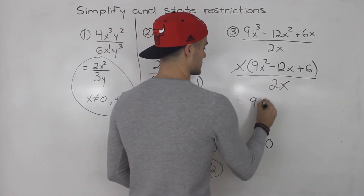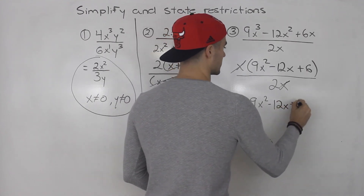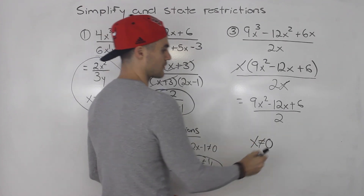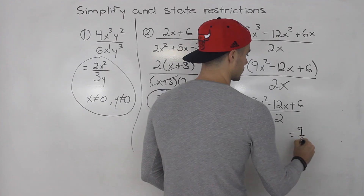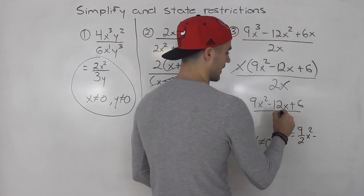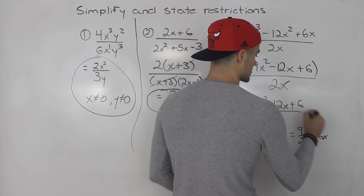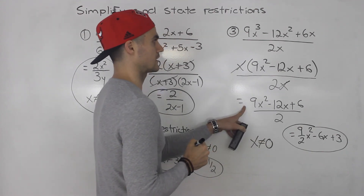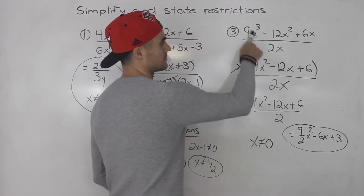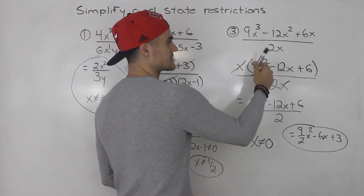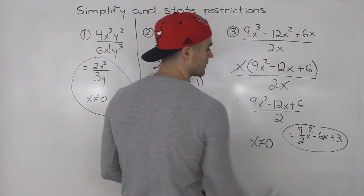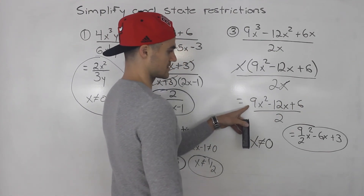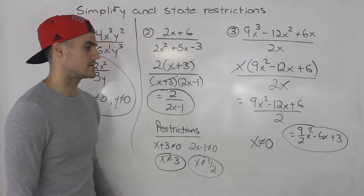So we're left with 9x squared minus 12x plus 6, all over 2. You could also split up the fraction: 9 over 2 times x squared, minus 12x over 2 which gives 6x, plus 6 over 2 which gives 3. Either way works — I'd probably just leave it as one fraction. So it simplifies to that, and the restriction is x cannot equal zero.